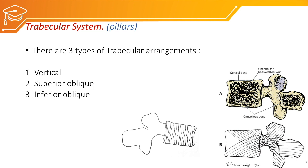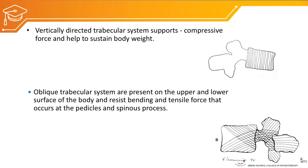The trabecular system is of three types: vertical (pillars), superior oblique, and inferior oblique. The vertically directed trabecular system supports compressive force and helps sustain body weight. The superior oblique and inferior oblique trabecular systems resist the bending and tensile forces that occur at the pedicle and the spinous process.